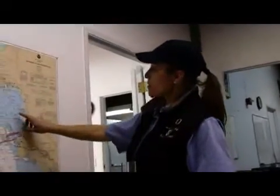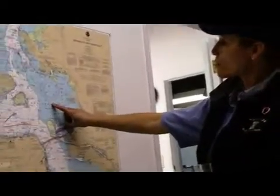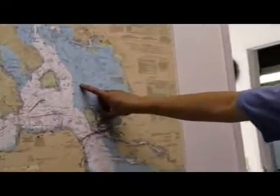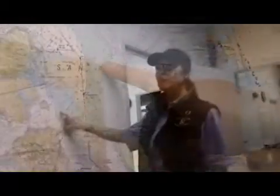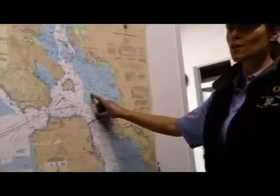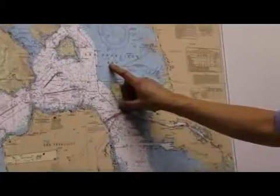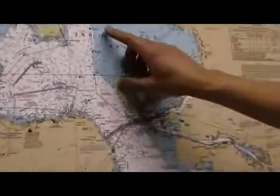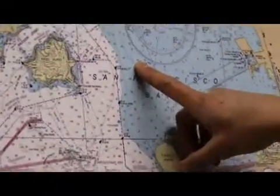You'll notice that there are all these small numbers throughout the chart, and this is the depth — these are mean lower low water heights. So that would be 10 feet.